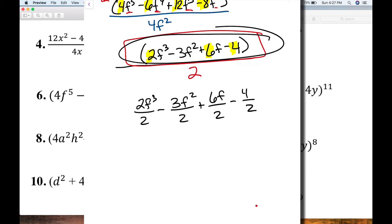So let's see, I can simplify the 2s. And 3 over 2 doesn't simplify, but 6 over 2 does. So that's 3 over 1. And this simplifies to 2 over 1. So now my answer, my simplified answer, is f cubed minus 3 over 2 f squared, plus 3f minus 2. And this is my final answer.